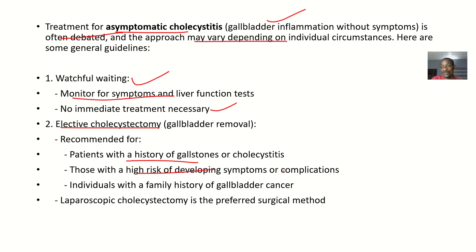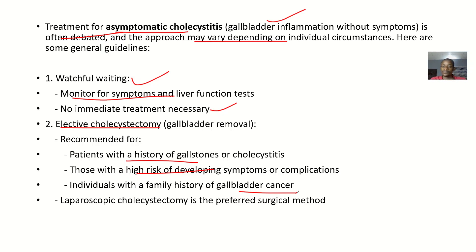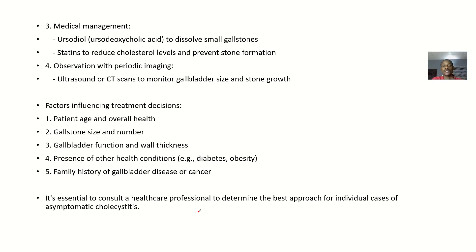It's also indicated for those with a high risk of developing symptoms and complications, and for individuals whose family members have suffered from a similar condition or gallbladder cancer — because gallbladder cancer usually starts from inflammation. In such cases, you might just want to remove it. Laparoscopic cholecystectomy is the preferred surgical method.